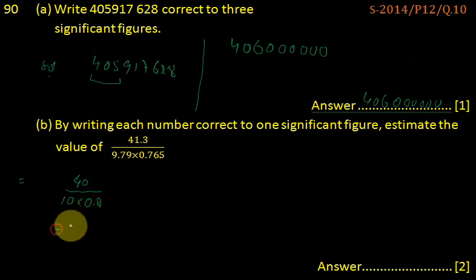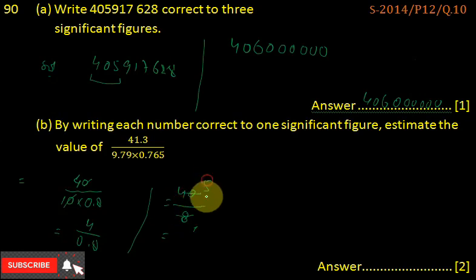Now we have to solve this. This 0 goes with this 0, and it becomes 4 upon 0.8, or further we can write 40 divided by 8. When we remove the decimal, we also insert 0 after 4. So it becomes 8 into 40, and the answer is 5.